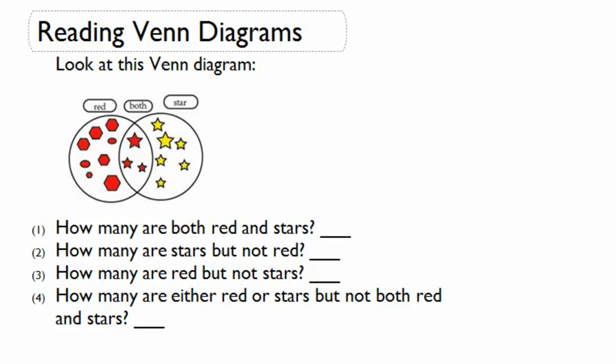How many are both red and stars? So if we're looking for things that are both, we're going to look in this overlap region. Here we have one, two, three items that are both red and stars.